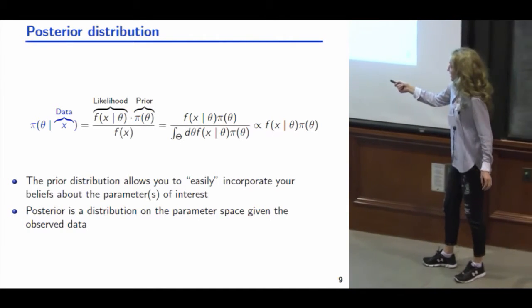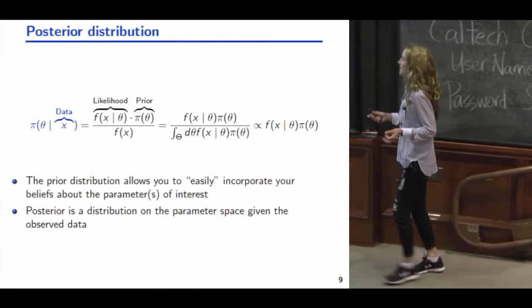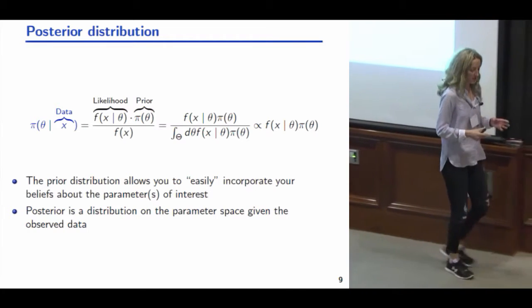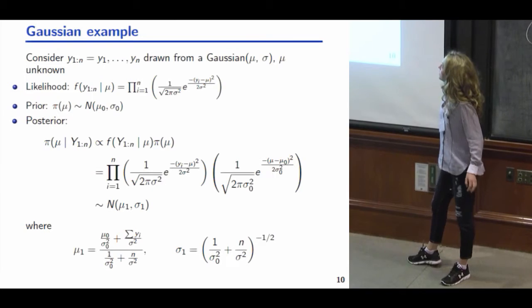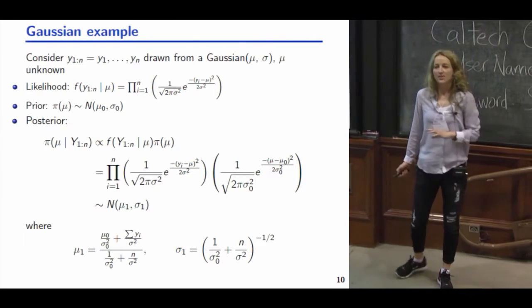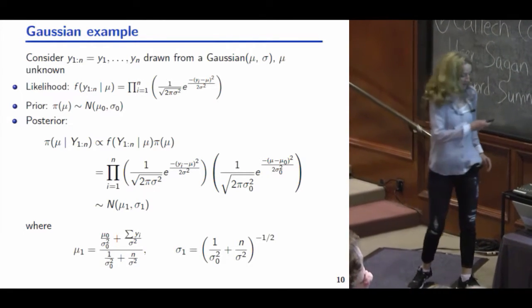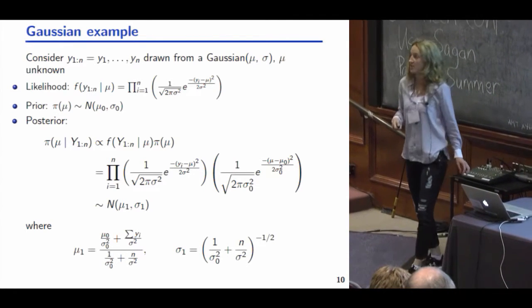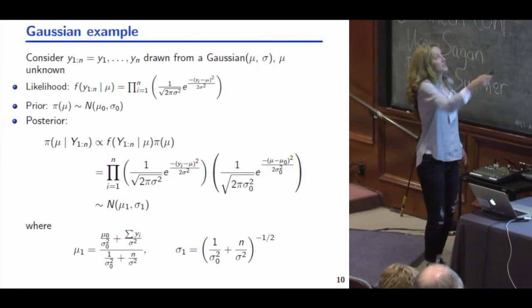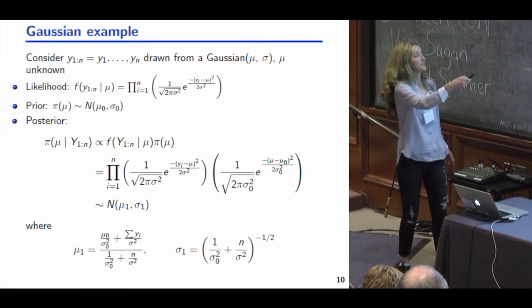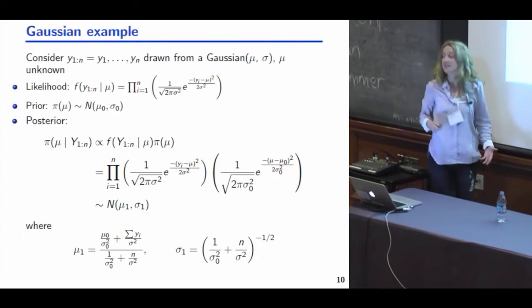The posterior distribution is a distribution on the parameter space given the data — theta given the data. Given our posterior we can understand the uncertainty, do point estimation, compute credible intervals, and other inference. For example, starting from a Gaussian likelihood where data are drawn from a Gaussian distribution with mean mu and standard deviation sigma, if we pick a Gaussian prior, the posterior also ends up being Gaussian — a convenient result.